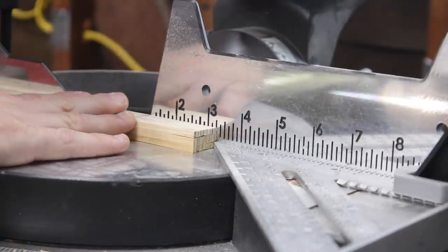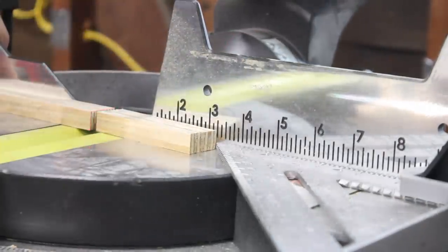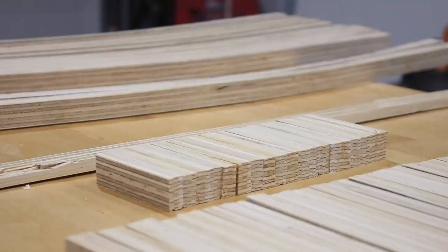Next up were the spacers for the legs. I took the strips that were three pieces thick and cut them into two lengths. One was three and a half inches for the top spacer and one was two inches for the bottom one.